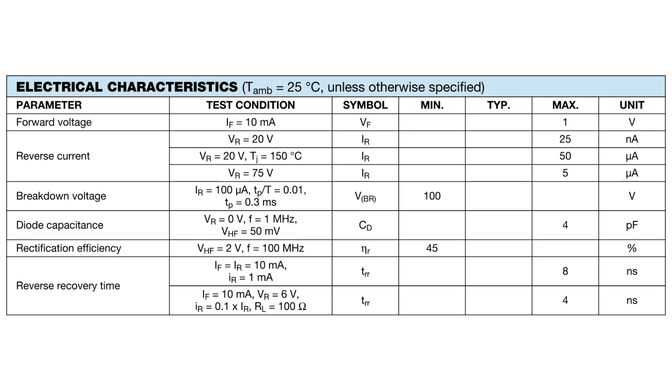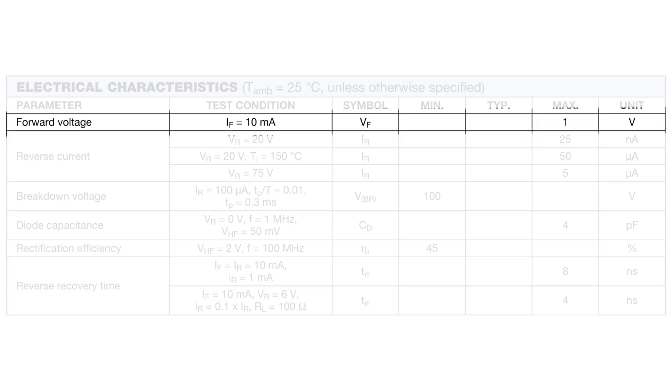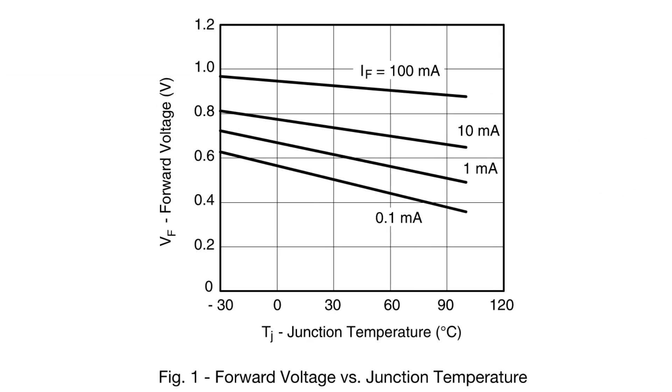Diodes have a voltage drop in their forward direction, usually lower than 1 volt. Interestingly, the voltage drop varies with temperature. This effect can be used to construct crude temperature sensors.